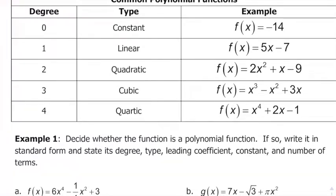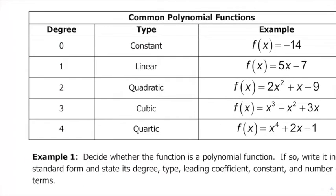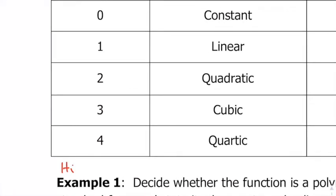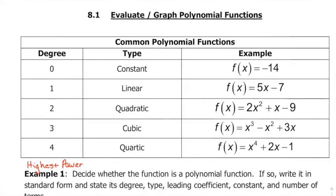They're all named based off of the highest power. For example, the squared here — that's a quadratic — the highest degree we call it 2. The degree is the highest power of everything. So if you look at your linear example, the implied power is going to be 1, and that's why we say it's degree 1 and it's linear.